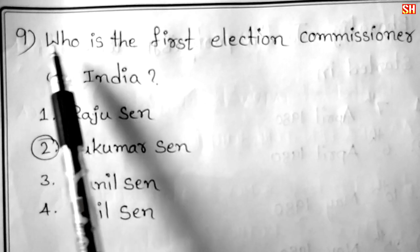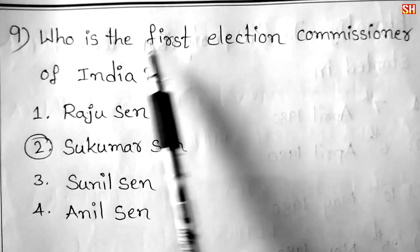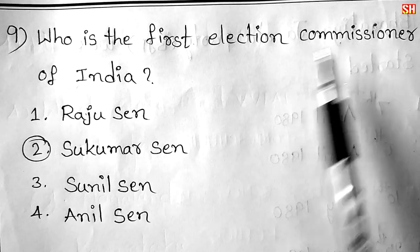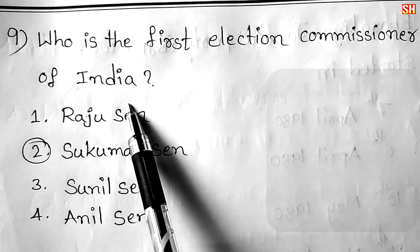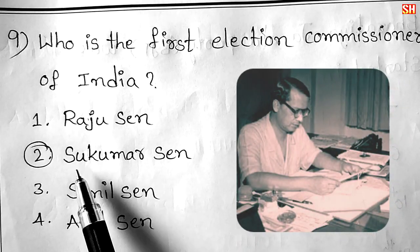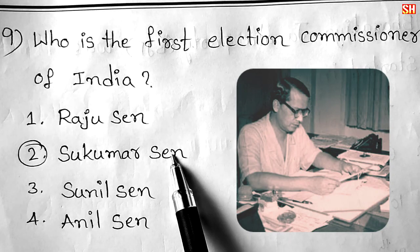Ninth question: Who is the first election commissioner of India? Answer: Sukumar Sen.